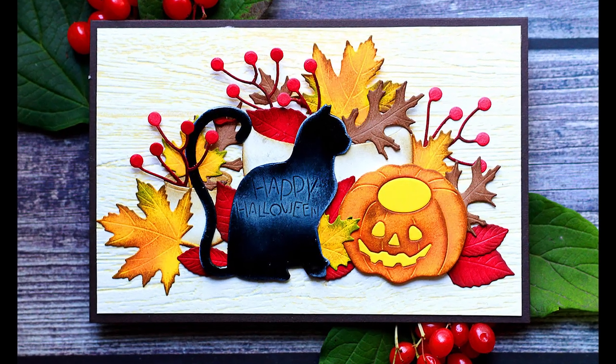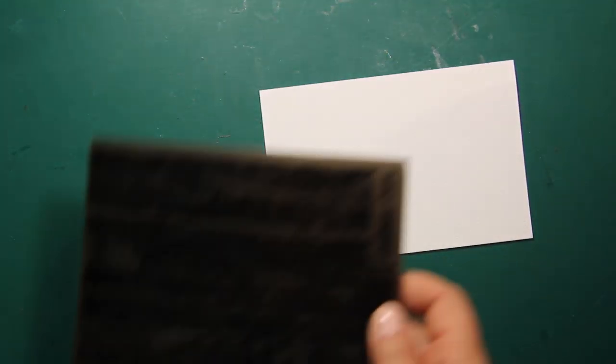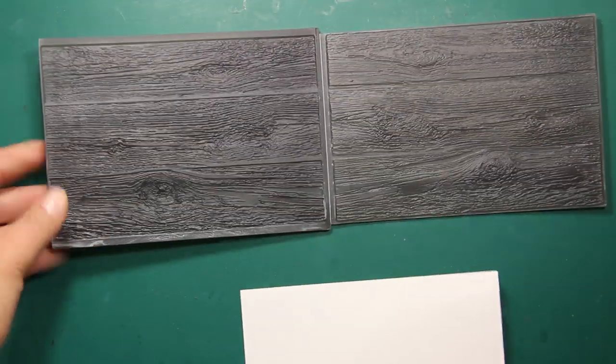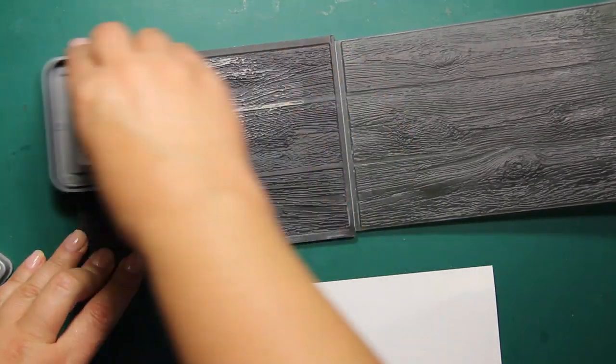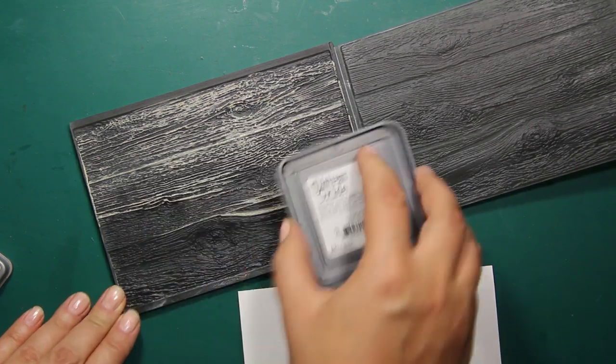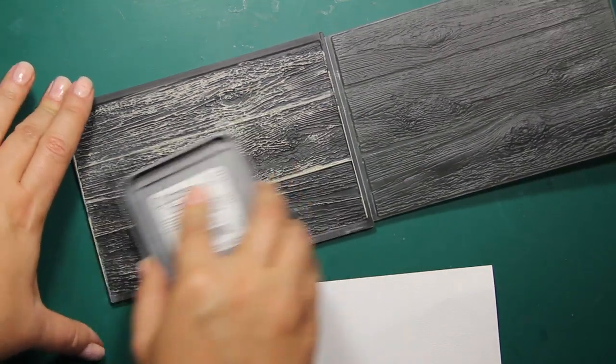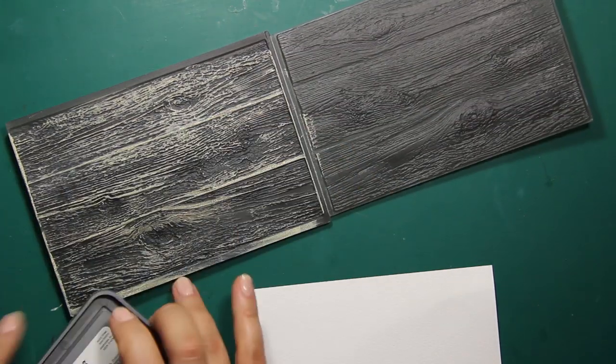So let's get started. I have pre-cut a piece of watercolor paper to about 4 by 6 inches. I'm going to use this 3D embossing folder by Tim Holtz called Lumber. I'm going to apply Antique Linen distress oxide ink onto one side of the embossing folder.